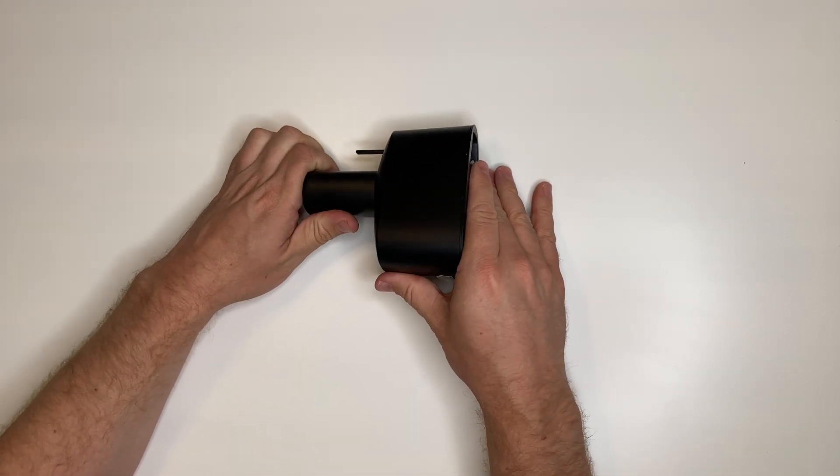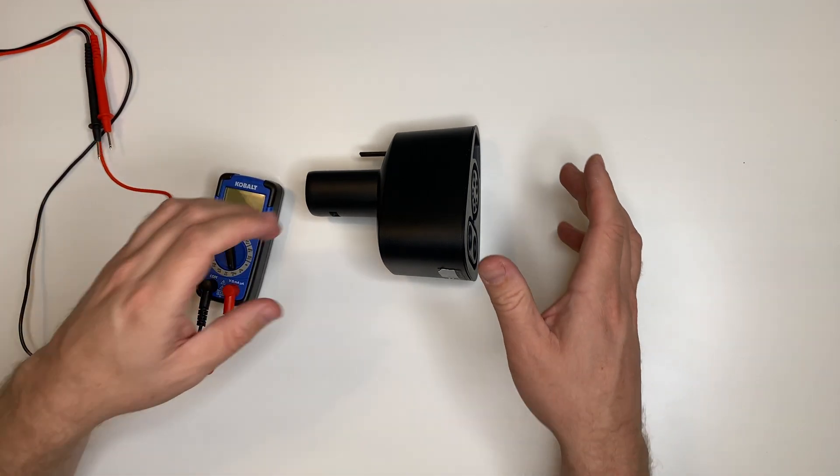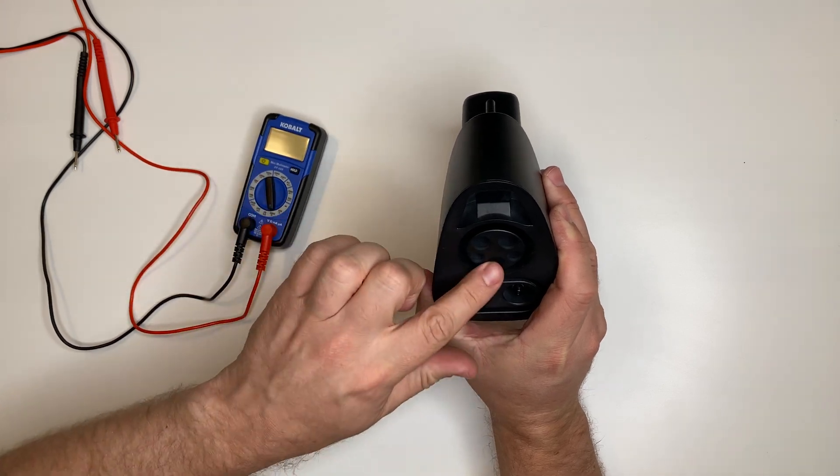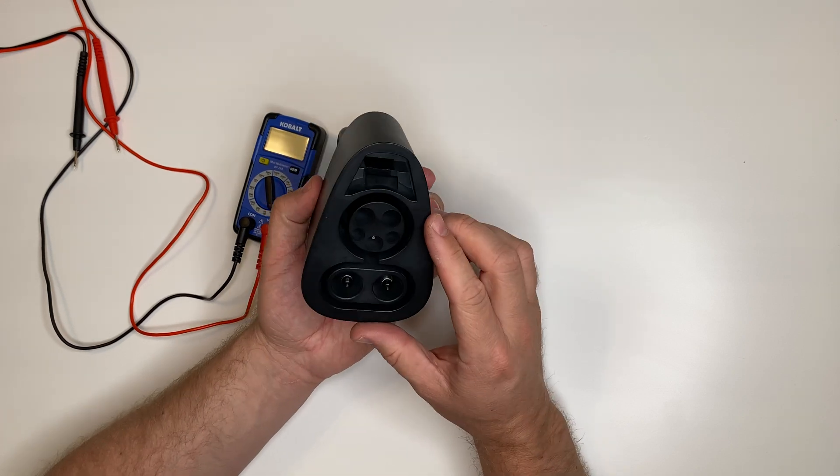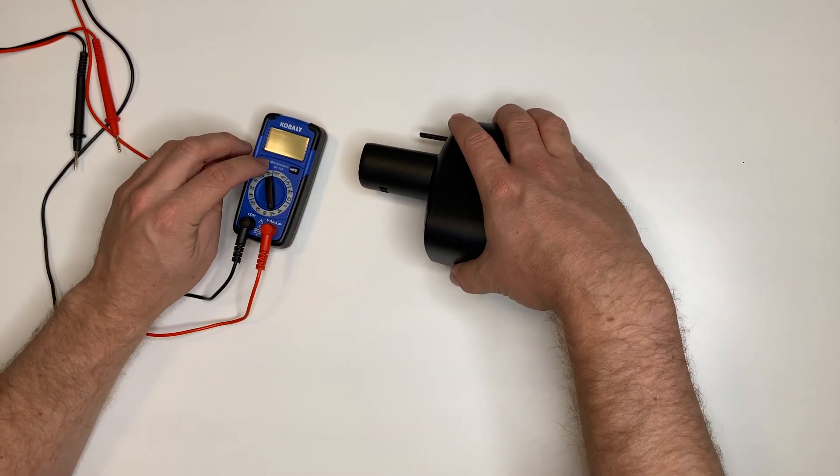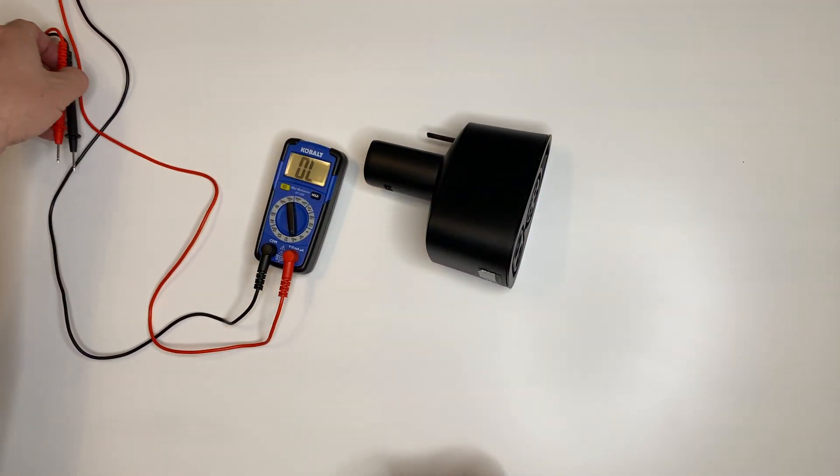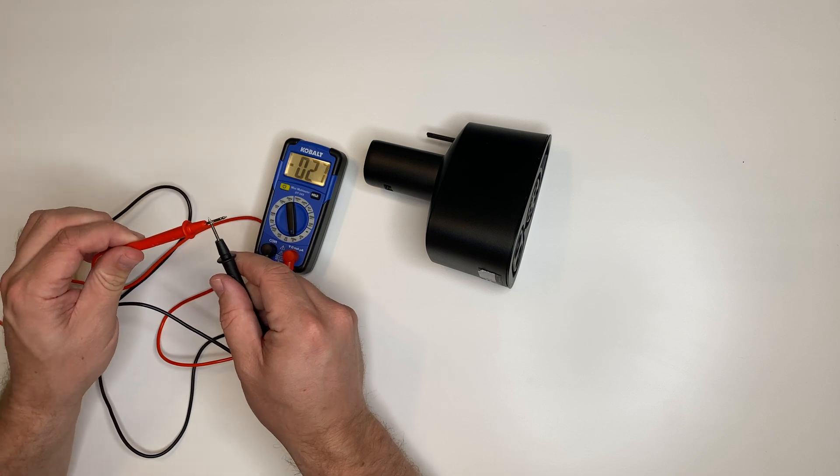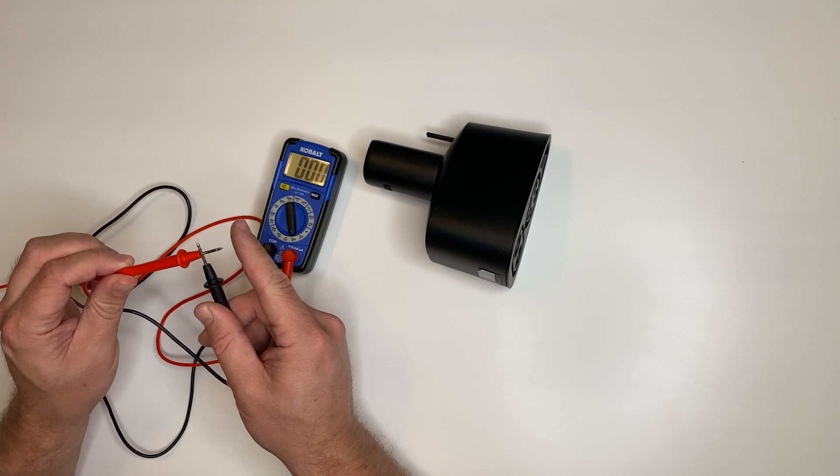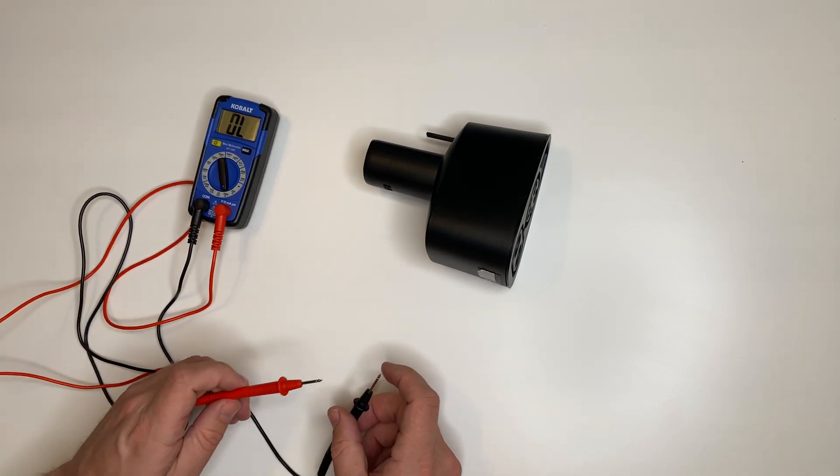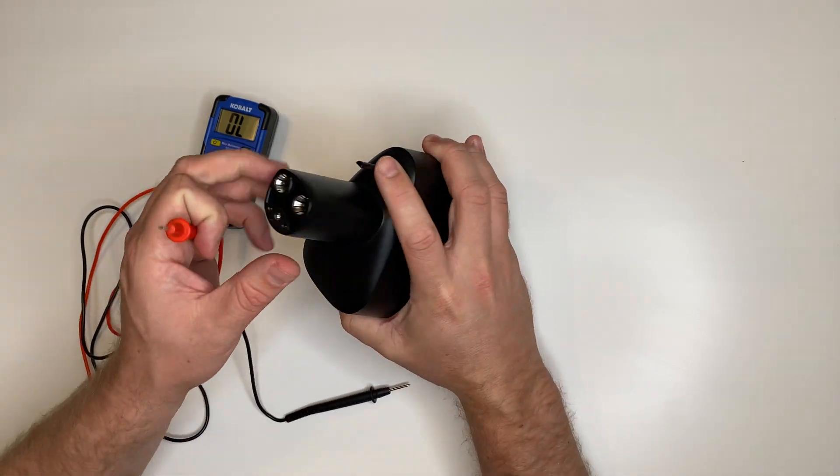Let's get that turned on. We can see here that there's currently no connection, and when we touch the probes together we get a resistance of essentially zero ohms, which essentially means a straight-through connection.